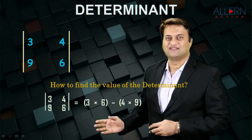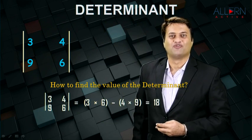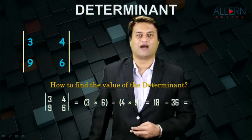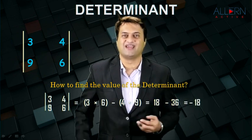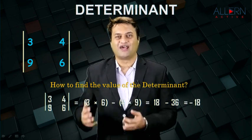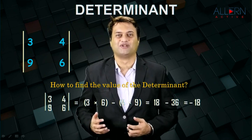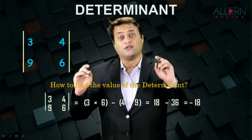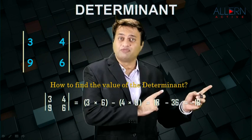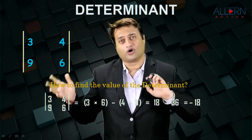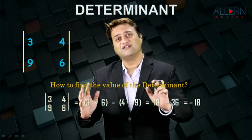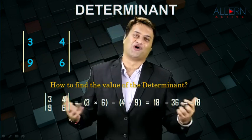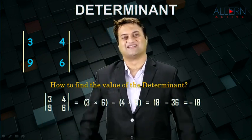Let's calculate: three sixes are 18, four nines are 36, so 18 minus 36, that's minus 18. And your answer is: the value of this determinant is minus 18. Very simple. Now before we start with Cramer's rule, we need to solve a few sums which only deal with how to find the value of a determinant — as simple as that.